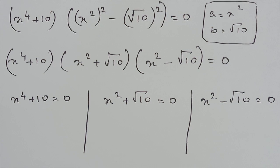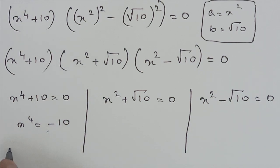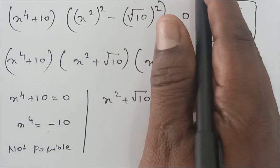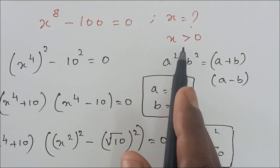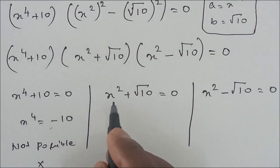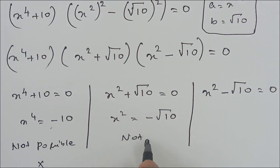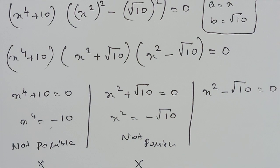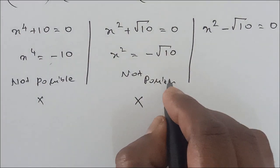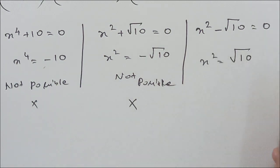From x^4 + 10 = 0, x^4 = -10, which gives a negative value — not possible since x must be greater than zero. From x^2 + √10 = 0, x = -√(√10), which is also not possible. So we take the third equation: x^2 = √10.